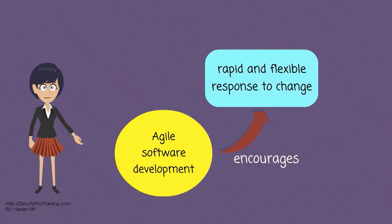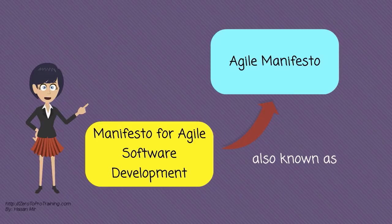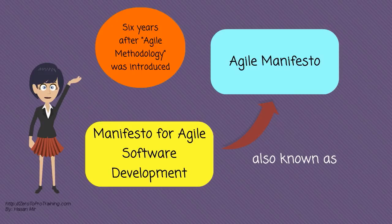The manifesto for Agile Software Development was first proclaimed in 2001, also known as the Agile Manifesto. This is six years after the Agile methodology was originally introduced.